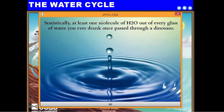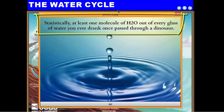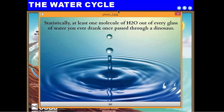Here's a meme I found on the internet — not a funny one, but a cool head-scratcher. Statistically, at least one molecule of H2O out of every glass of water you ever drank once passed through a dinosaur. So the water you've been drinking your whole life is millions and millions of years old. This reinforces the idea that water isn't made fresh on Earth — it's being cycled through different phases over time.